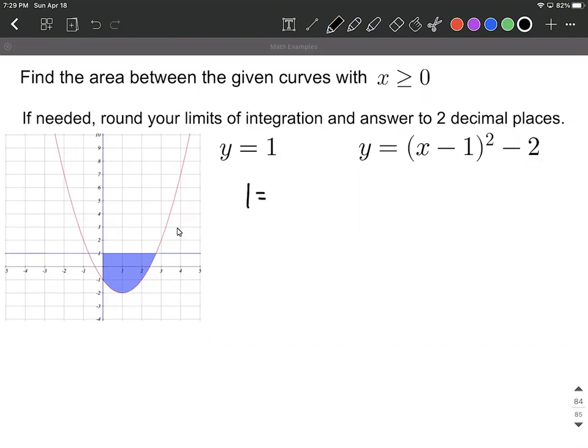We can set them equal to one another. So 1 equals (x-1)² - 2, and we just need to solve this down. I'm going to add the 2, move it to the other side. Then apply a square root to both sides to get rid of the square.